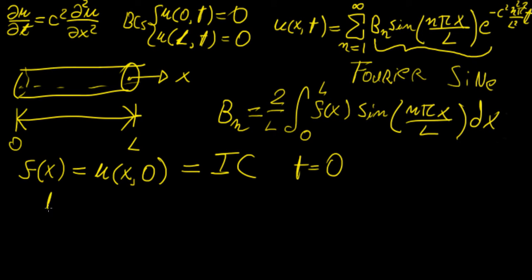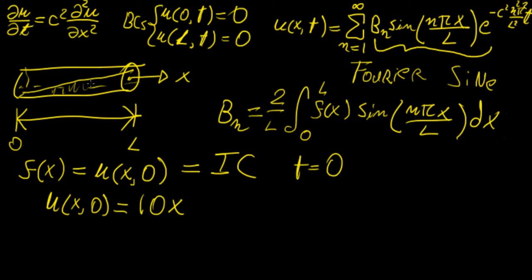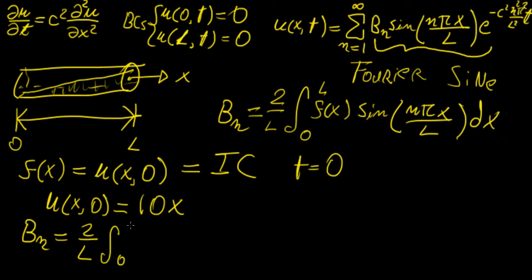In this case, let's say our initial condition is that the temperature distribution follows a straight line defined by 10x. So basically as you move along the x-axis, the temperature distribution increases — the rod is initially hotter on one side than the other. We're going to put this into the formula to find the coefficients: bn equals 2 over l, from 0 to l, of 10x sine(nπx over l) dx.